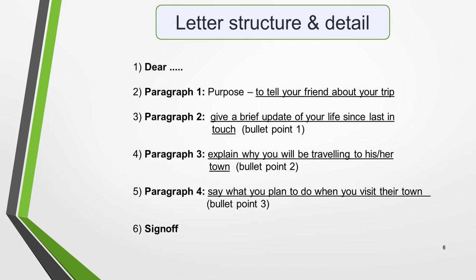The person we're writing to is our friend, so that's who we'll address in our greeting. Paragraph 1 is the reason or purpose for writing, which is to tell your friend about your upcoming holiday. Paragraph 2 will be about the first bullet point — giving an update of your life since you were last in touch. Paragraph 3 covers the second bullet point, explaining why we're travelling to his or her town. And paragraph 4 covers the third bullet point — saying what we've planned to do when we visit. Finally, we'll sign off the letter.